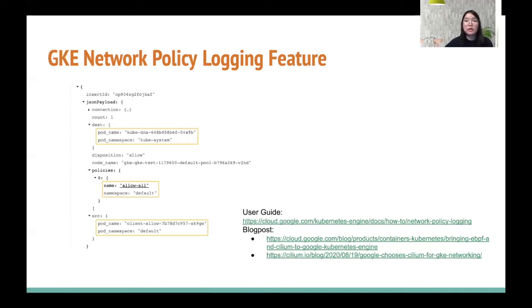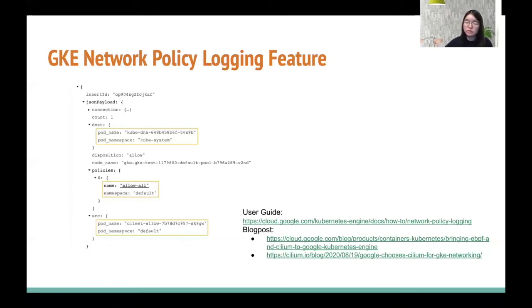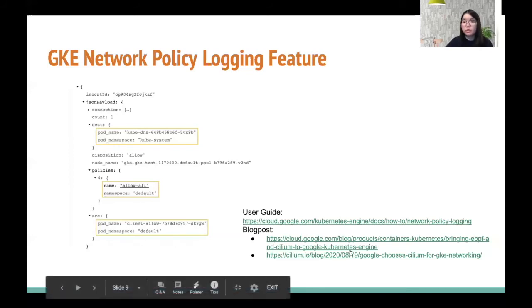Kubernetes policy logging is the first feature we developed on top of eBPF, but we already see its great potential. eBPF's ability to augment network packets with custom metadata enables a long list of possible use cases. It can help us enhance observability, security, and many other Kubernetes-aware packet manipulations without sacrificing performance. We are very excited about embracing this new technology and contributing to the Cilium community as well. Here are the related blog posts if you are interested in reading more.